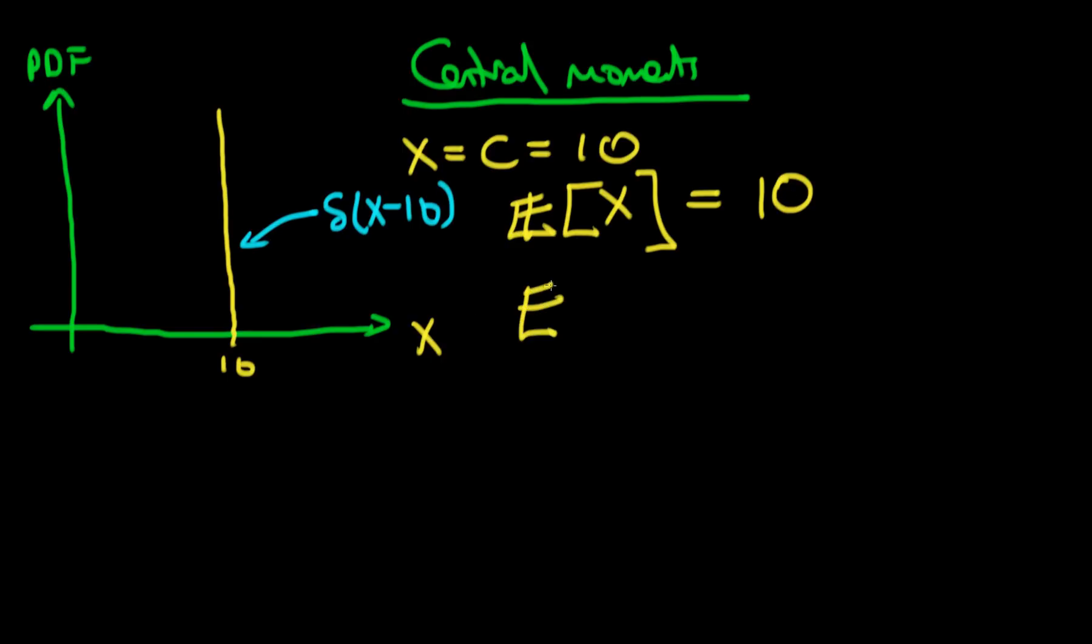And secondly what about the expectation of x squared? What would that actually equal for this particular case? Well because the variable is just always at 10 then the expected value of x squared is just going to be 10 squared which is 100. And so the first moment here is quite interesting. It tells us where our variable is centered around. The second one on its own doesn't look that interesting. It just tells us what the mean squared is really. So let's think about how we might make this second moment a little bit more interesting.